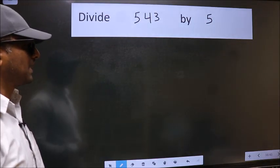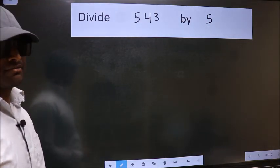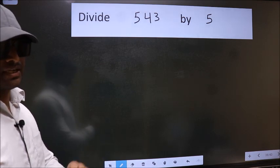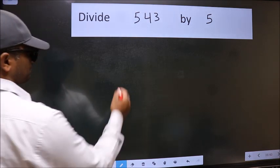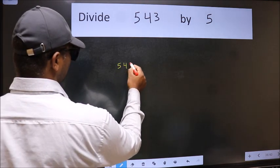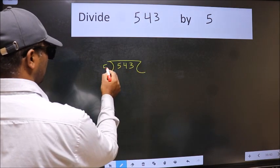Divide 543 by 5. To do this division, we should frame it in this way: 543 here and 5 here.